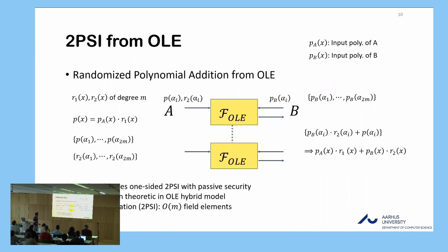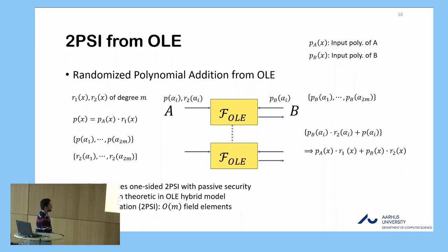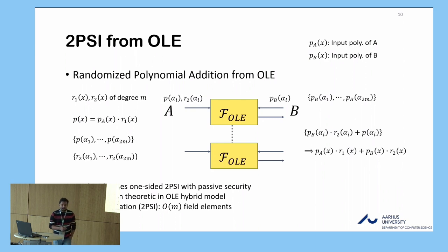This OPA functionality already gives a one-sided two-party PSI protocol with passive security, because the randomized polynomial already contains the encoding of the intersection. This protocol is information-theoretically secure in the F_OLE hybrid model, and the communication complexity is order-M field elements. Even implementing F_OLE using the GNN'17 OLE protocol, which has constant communication overhead, preserves this efficiency.